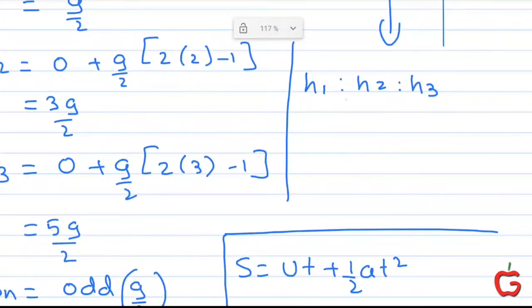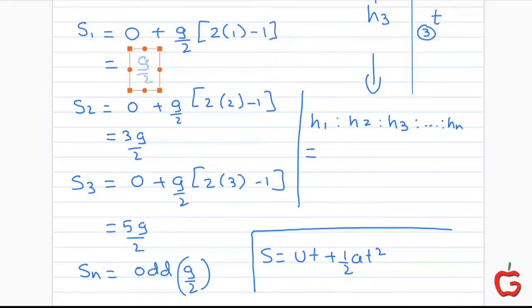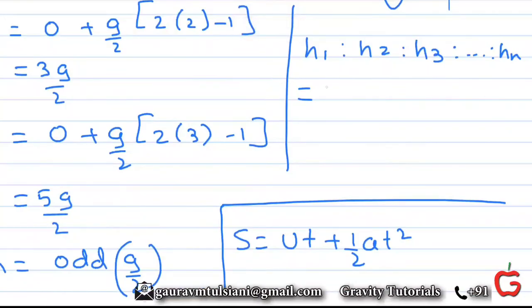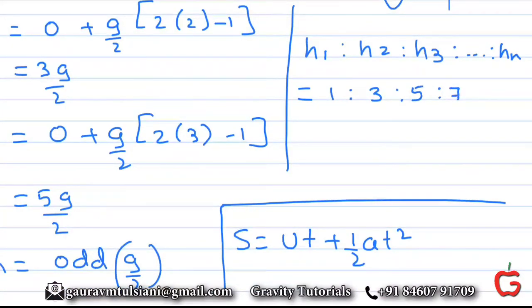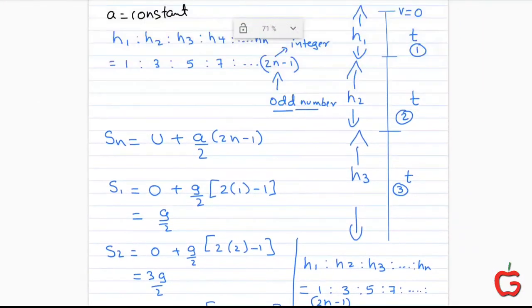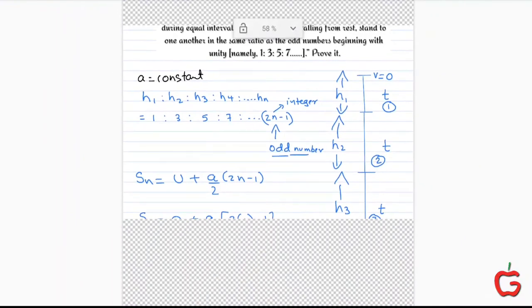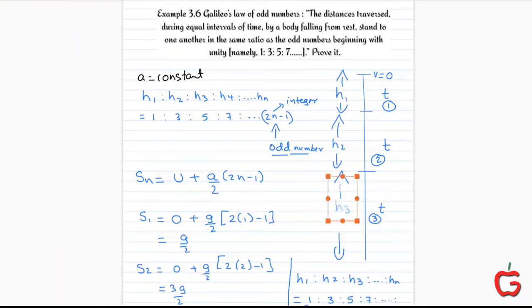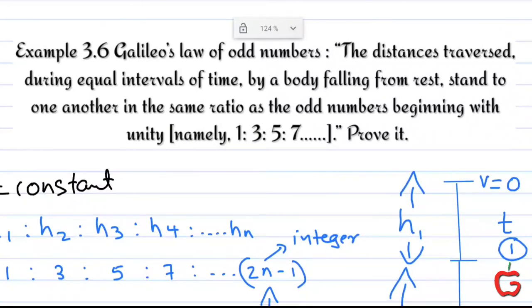Taking the ratios, the g/2 terms cancel out, so we get the ratio 1 is to 3 is to 5 is to 7, and in general 2n-1. We get the ratio of odd numbers. The distance covered in subsequent equal time intervals for a body beginning from rest is in the ratio of odd numbers: h1 is to h2 is to h3 are in the ratios of odd numbers. This is what Galileo's law states — the distances traveled during equal intervals of time by a body falling freely from rest stand to one another in the same ratio as the odd numbers.